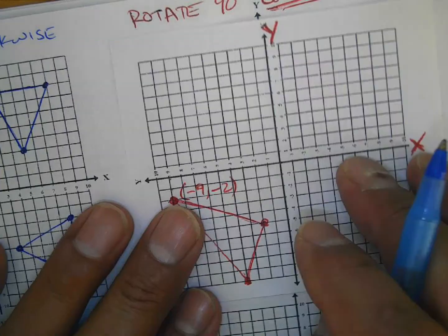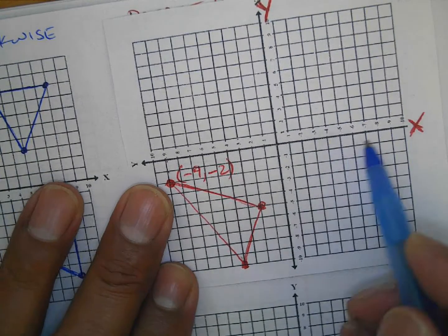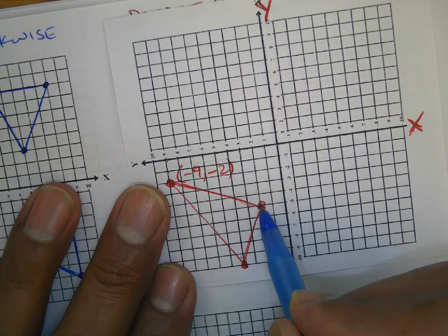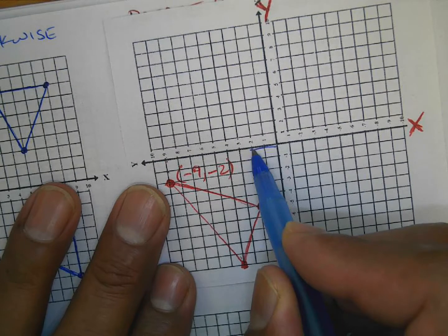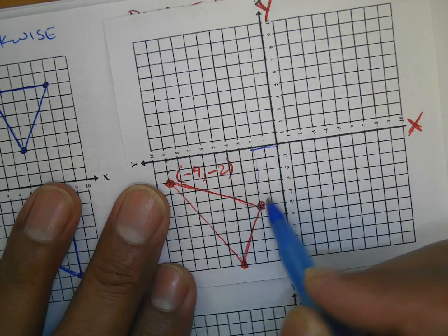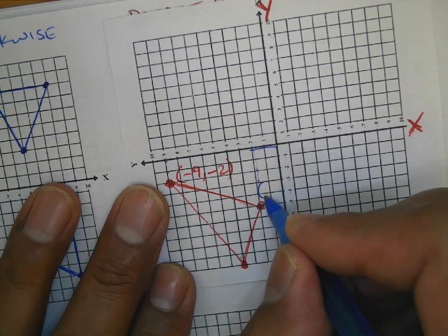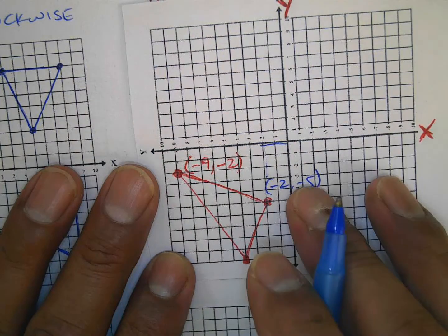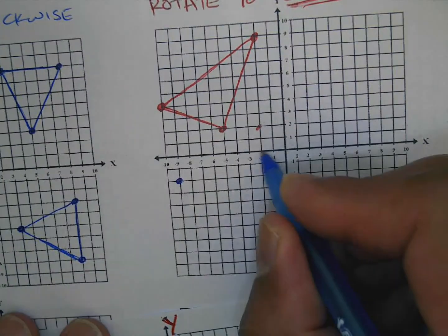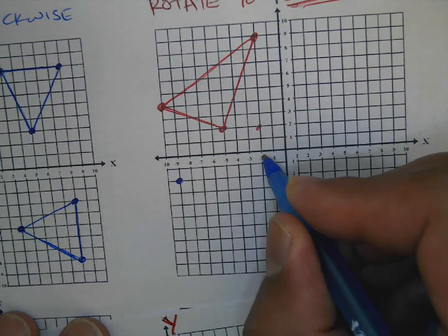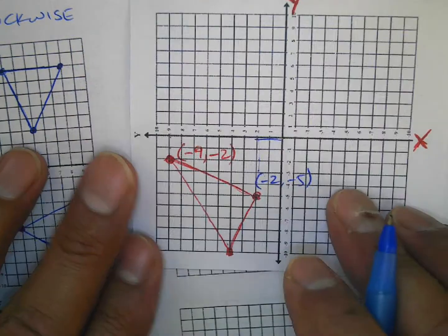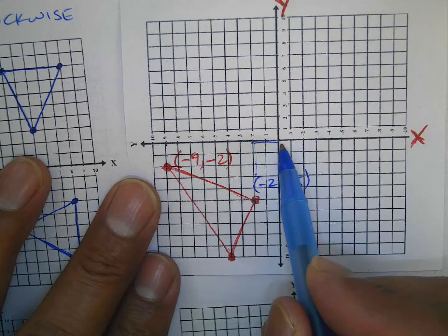Then I rotated it this way and this one becomes negative two, negative five — one, two, three, four, five negative five. So that coordinate is (-2, -5). I go over here: (-2, -5).